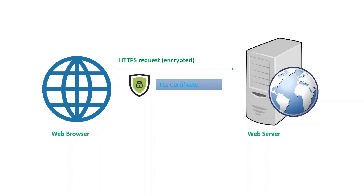HTTPS means Hypertext Transfer Protocol Secured — the request will be secured, basically encrypted. The encrypted data will be transferred over the network to the server. Only the server can decrypt it. If someone in between tries to hack your data, they cannot decrypt or see your data. When the server responds back to the browser, that response is also encrypted so only the web browser or web server can decrypt the data and see the plain text.